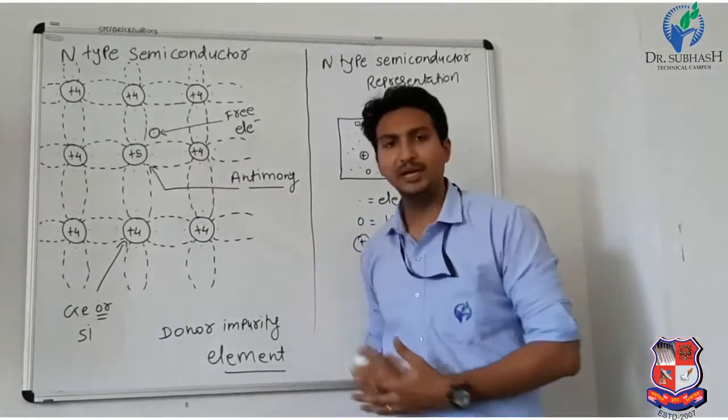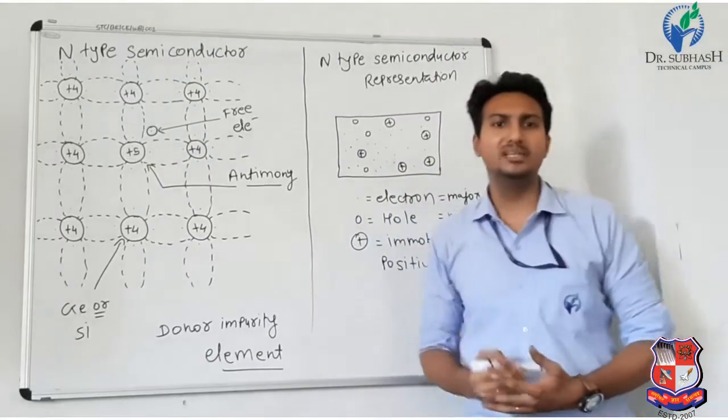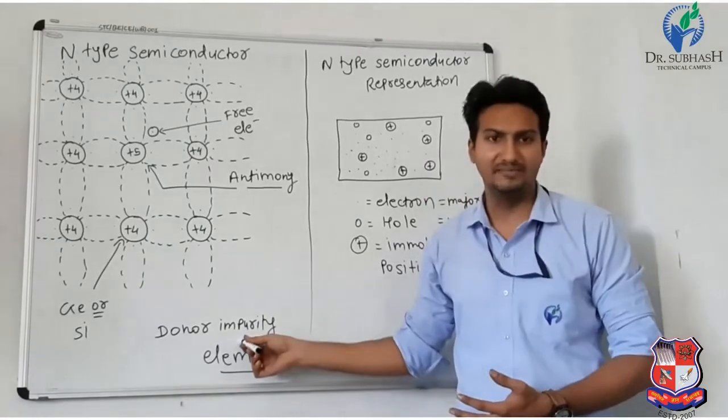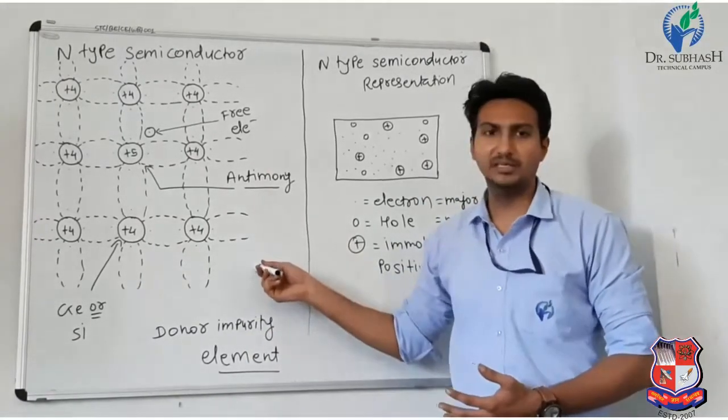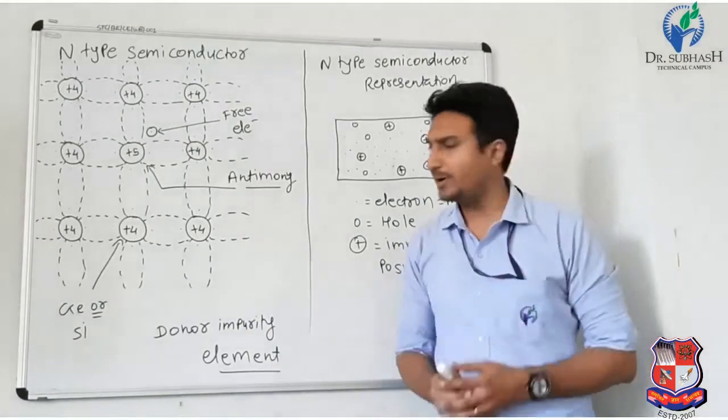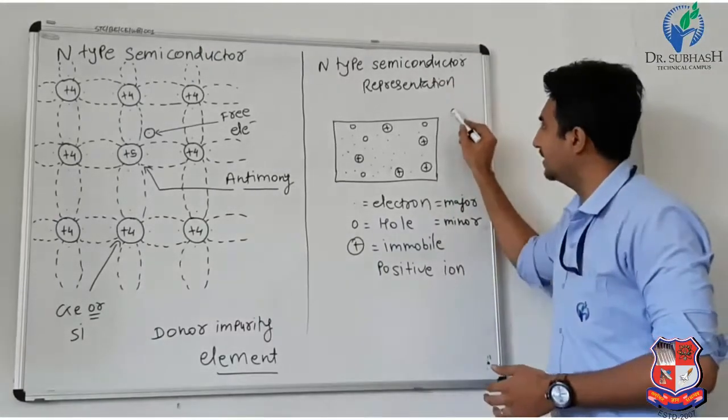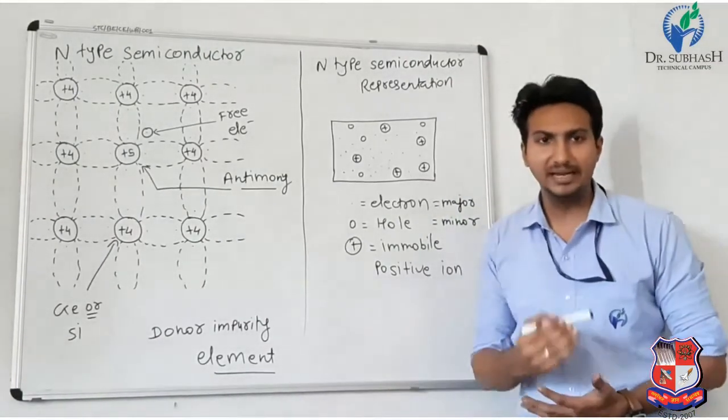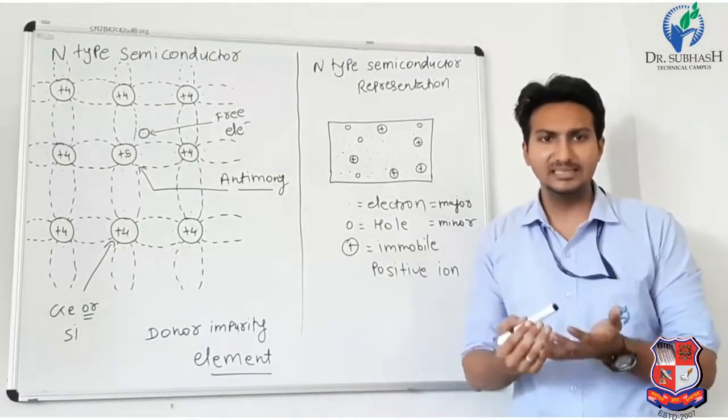This is called the donor impurity element. The donor impurity donates one electron in excess. This is the crystal structure of N-type semiconductor.